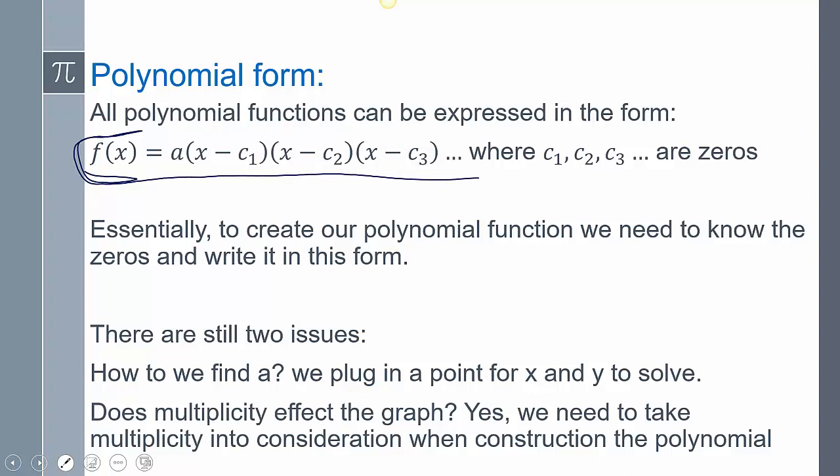But there are two issues here. The first issue is we need to find this A. I know what these are - that's where it crosses the X. But how do I find this value? What we need to do is plug in a point on our graph, and we plug in that X and Y value. So we plug in for Y, plug in for X, and now you've set up an equation in which you can get A by itself. The second is does multiplicity affect our graph? The answer is yes. We need to take into consideration how that graph interacts with the zeros when constructing our polynomial.